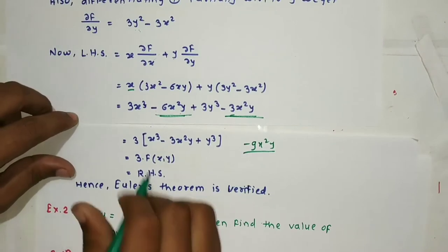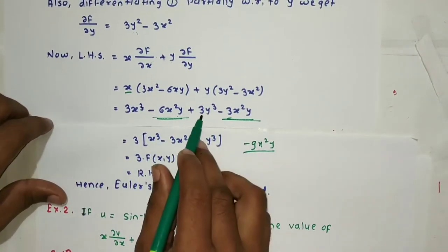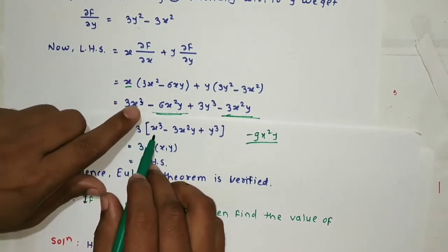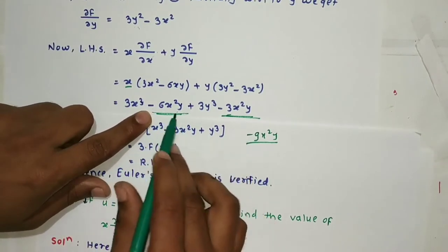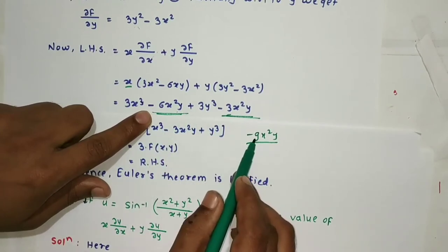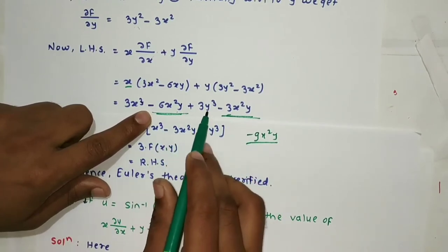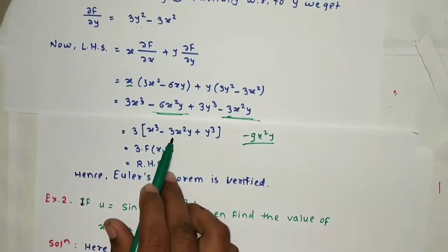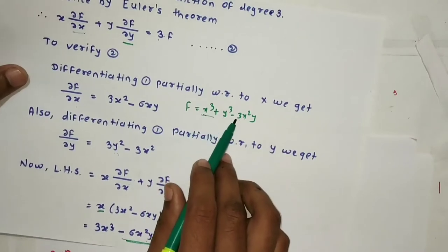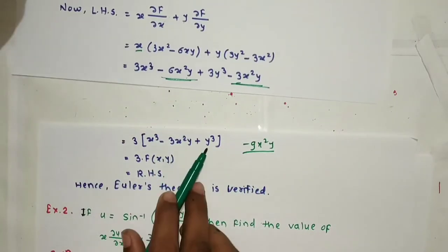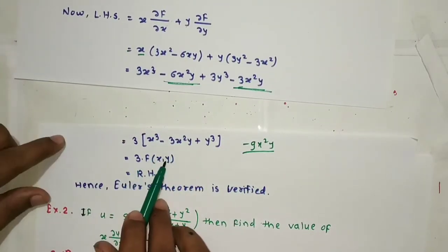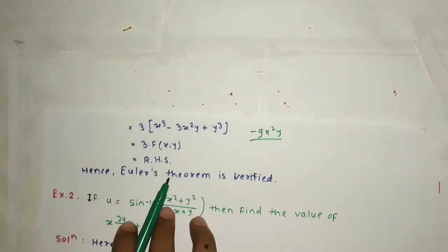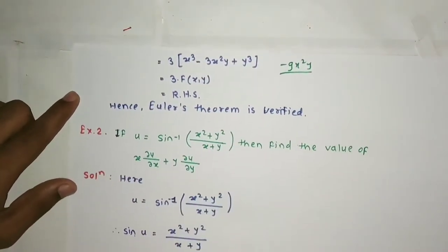Combining like terms: -6x²y - 3x²y = -9x²y. Taking 3 as common: 3(x³ + y³ - 3x²y). But x³ + y³ - 3x²y is our original function f. So LHS = 3f, which equals the RHS. Hence Euler's theorem is verified.